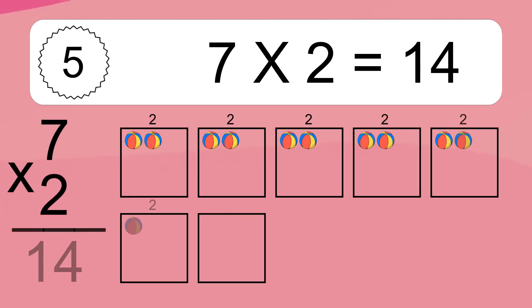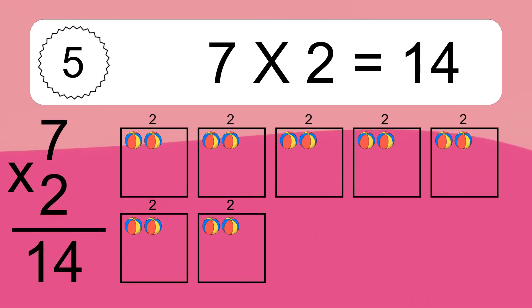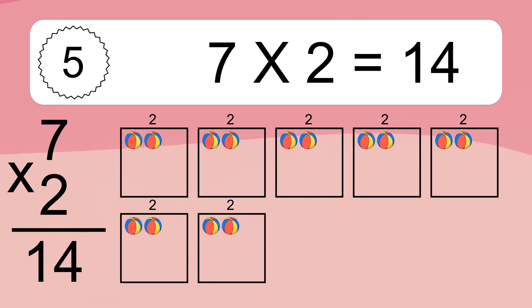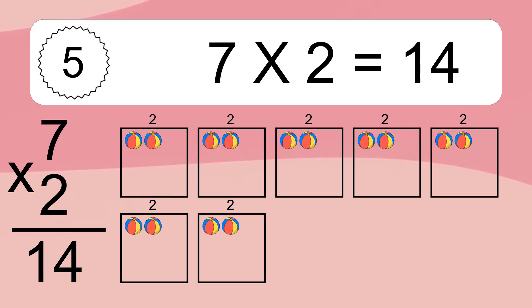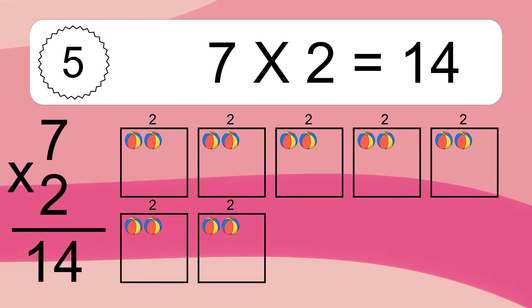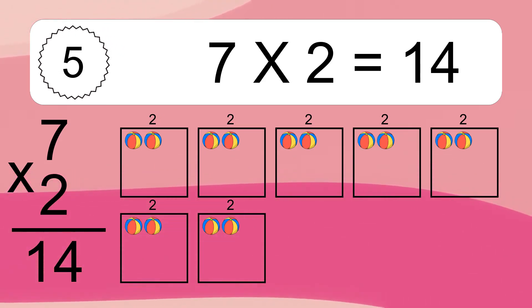7 times 5 equals what? 7 times 2 equals 14. We have 7 boxes, and each box has 2 colorful balls inside. If you count all the balls in all the boxes together, you will have 7 times 2 balls. This equals 14 balls.